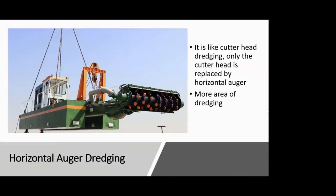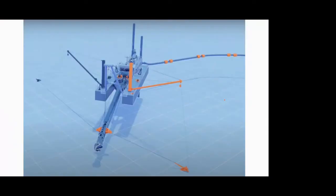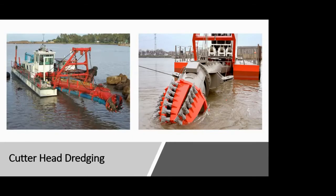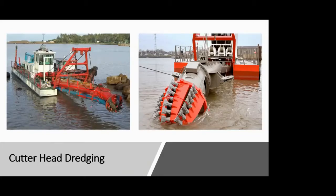The next method of dredging we have been studying is horizontal auger dredging. This is very similar to what we saw in the last lecture about cutter head dredging. In that, we have a dredger or a floating barge over which there is a cutter head projected horizontally at some angle. This head is lowered into the water body until it reaches the bed, where it rotates in a particular direction, excavating material. Simultaneously, a suction pipe extracts all the excavated material.